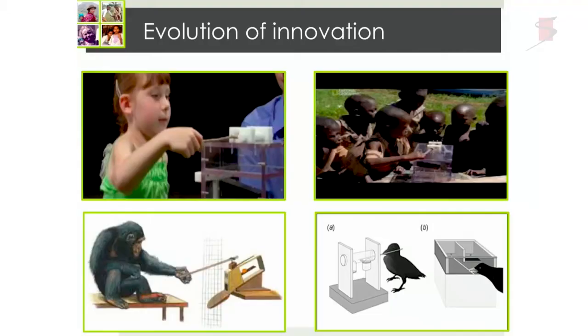We know that young children are brilliant in a great variety of ways — they are deeply inquisitive, interested in learning about the world, and can look extraordinarily scientific-like in testing hypotheses and discovering underlying causal mechanisms. Yet there is actually very little evidence for precocious innovation. Young children aren't very good at tool innovation — they are shockingly bad, given how good they are at other things like learning languages or engaging in high-fidelity imitation. In fact, New Caledonian crows and great apes actually outperform young children in many tool innovation tasks.